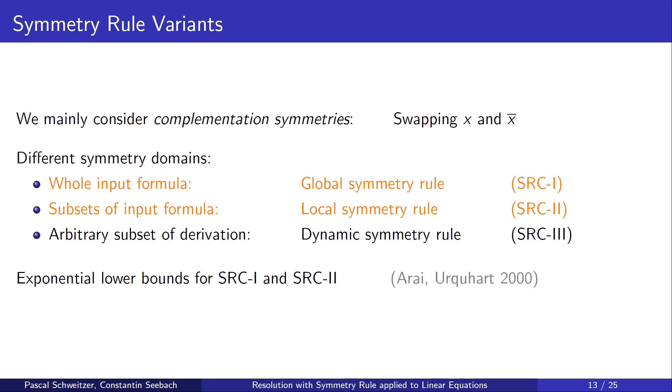Now, I will talk about the main ideas in more detail. There are different variants of the symmetry rule. We consider mainly the possibility to swap a variable with its negation. This is called a complementation symmetry. Also, there are different domains on which the symmetries can live. If we can only use symmetries on the whole input formula, we have the global symmetry rule. If we can use symmetries on subsets of the input formula, then we have the local symmetry rule. There is also a dynamic symmetry rule, which we do not consider. Exponential lower bounds for the global and local symmetry rule are known, but we show upper bounds for specific applications.